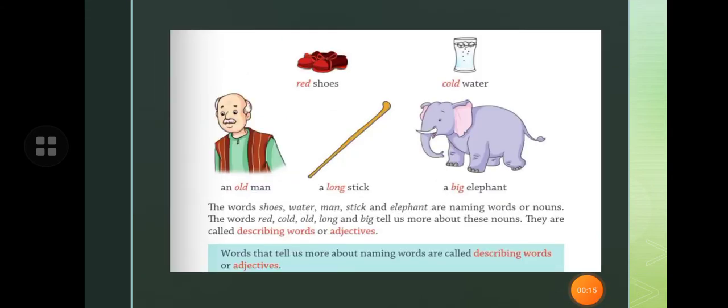Children, first let's see the example here. An old man, red shoes, cold water, long stick, and a big elephant. The words shoes, water, man, stick, and elephant are the naming words.